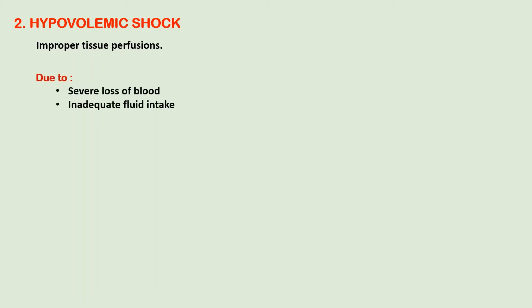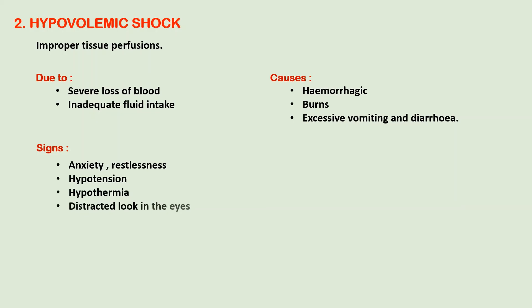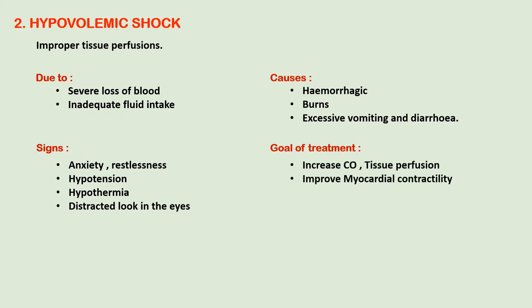The second type is hypovolemic shock, resulting from inadequate tissue perfusion due to severe loss of blood and inadequate fluid intake. Causes include hemorrhage, burns, excessive vomiting and diarrhea. Signs and symptoms include anxiety, restlessness, hypotension, hypothermia, and a distracted look in the eyes. Treatment aims to increase cardiac output and tissue perfusion and improve myocardial contractility using chronotropic agents, inotropic agents, and sedatives.